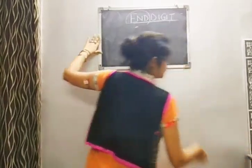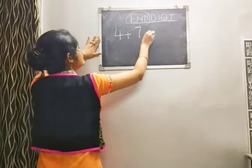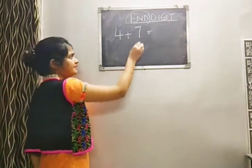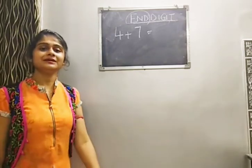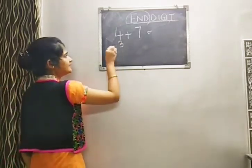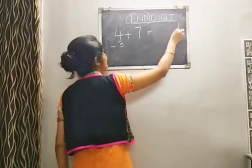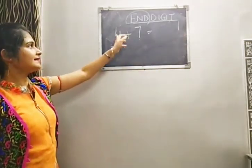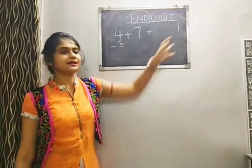Suppose 4 plus 7. Which is the greatest one? 7. Lowest is 4. Complement of 7 is 3. Subtract: 4 minus 3 equals 1. End digit is 1. Cross check: 7, 8, 9, 10, 11 — end digit 1. Clear?